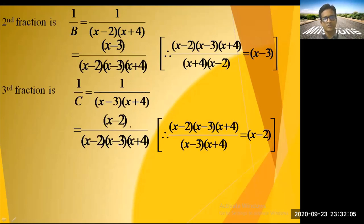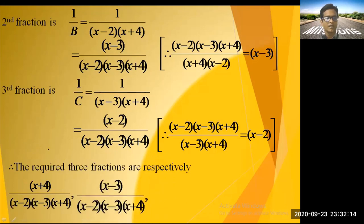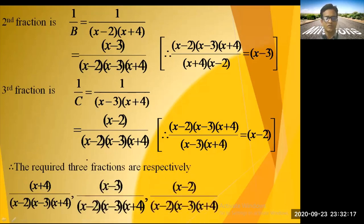So these are the fractions with a common denominator for the first, second, and third fractions — all expressed with the equal denominator (x - 2)(x - 3)(x + 4).